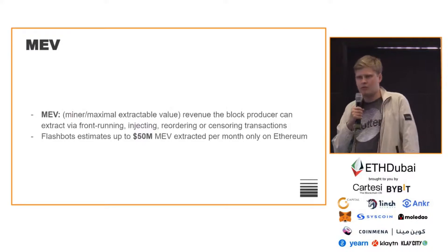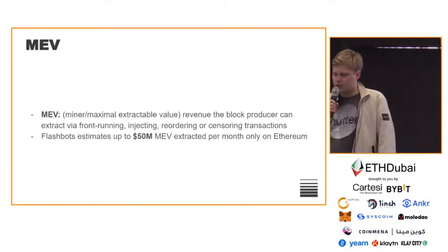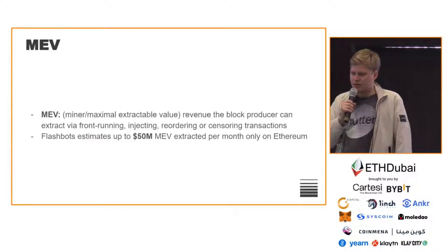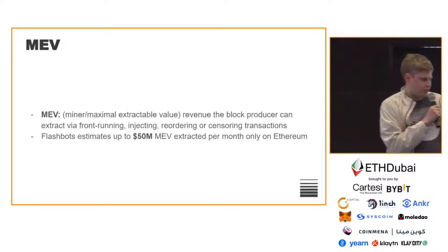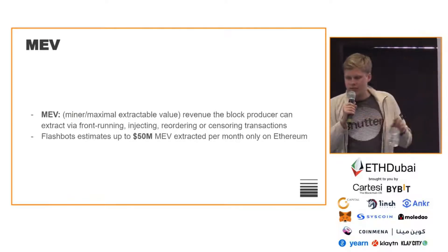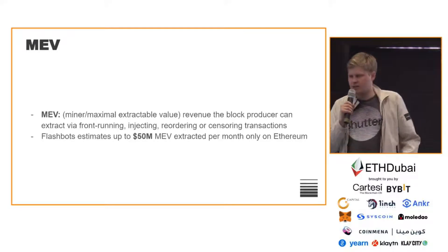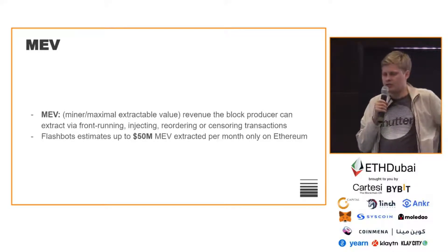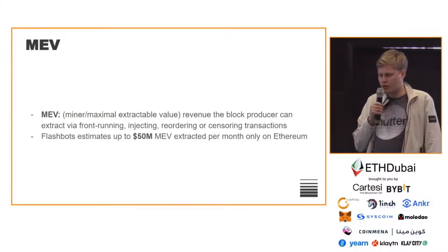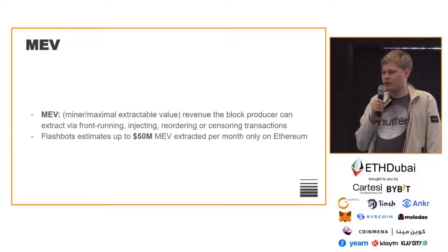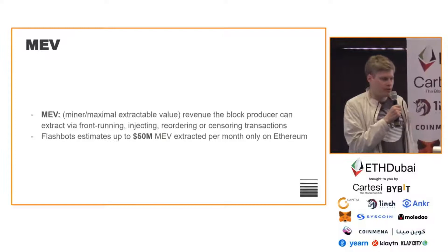Most of you here or watching online might be familiar with the problem of MEV, which stands for miner or maximal extractable value. It's essentially the revenue that a block producer can extract via front-running, injecting, and reordering transactions. It's an emerging issue that now commands up to $50 million per month just on Ethereum alone, and is also applicable to all other public blockchains.